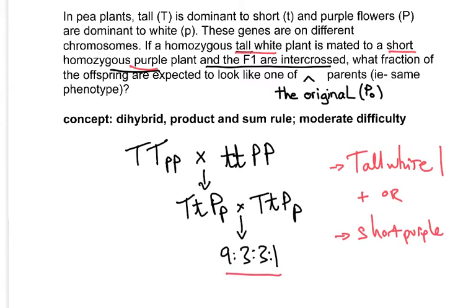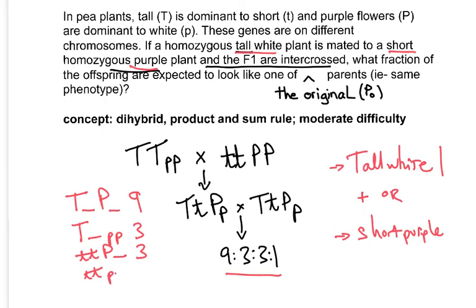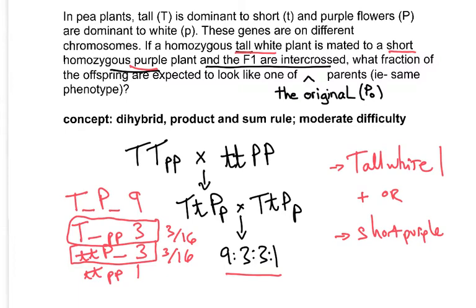Let's write out the genotypes associated with the 9:3:3:1. The nine is big T something, big P something; one group of three is big T something, little p little p — that group looks tall and white, so that's 3 out of 16. The short purple group is little t little t, big P something — also 3 out of 16. Using the sum rule, we get 6 out of 16, or three out of eight.